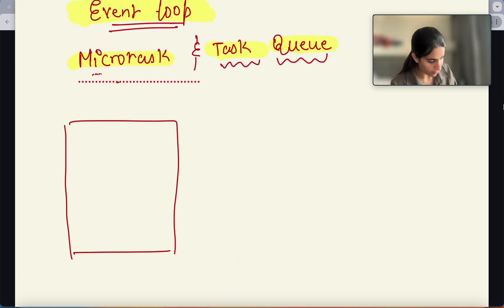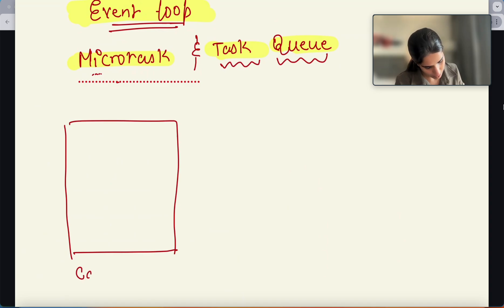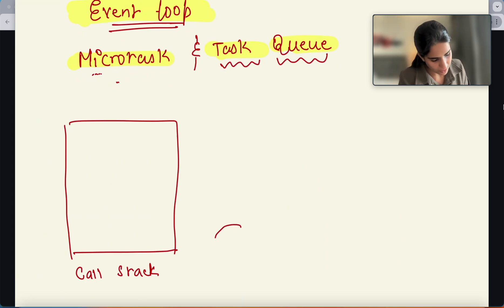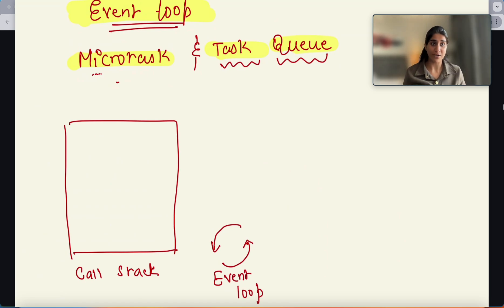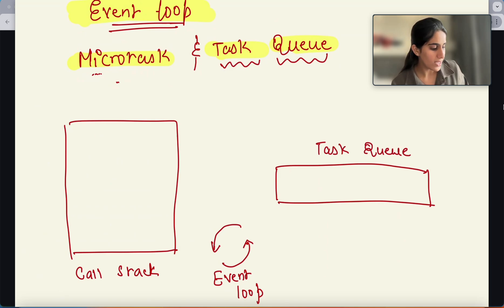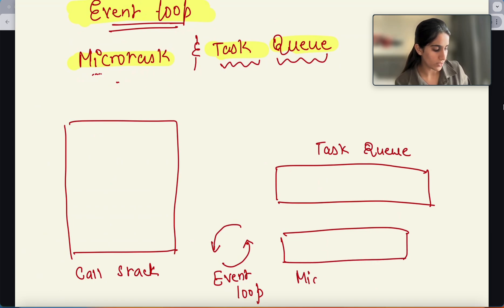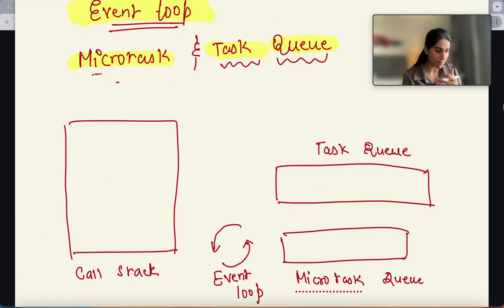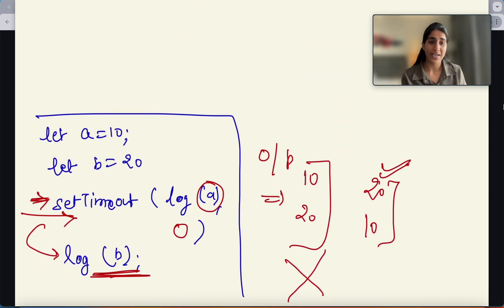So what happens is that we have something known as the call stack — this is our call stack, which is complete JavaScript execution. Then we have a circular thing which we call the event loop. Then we have two different queues: first is the task queue, and then we have another one which is known as the microtask queue. Now what happens — when you have this code, first you have let A equals 10, let B equals 20, then the setTimeout function.